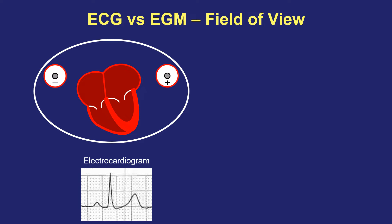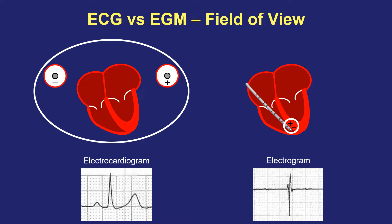However, when you place a catheter inside the heart with very closely spaced electrodes so that your anode and cathode are only two or three millimeters apart, the field of view is much, much smaller. So instead of seeing atrial and ventricular activity in their entirety, you're only going to see a little sliver of the local myocardial activation right at the location of where the bipolar is positioned. This recording is known as an electrogram, and with the catheter in the right ventricle, you're not going to see any appreciable atrial activity or ventricular activity that falls before or after this local recording.